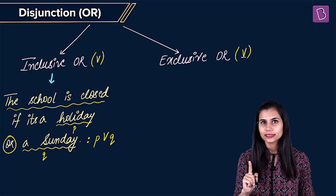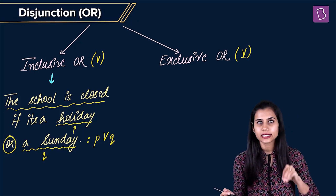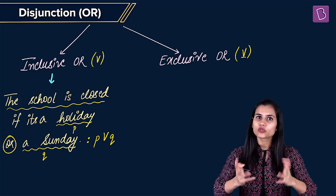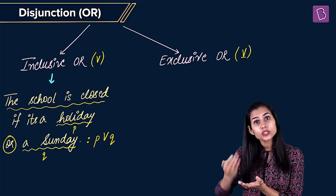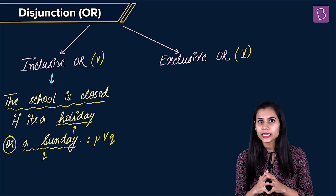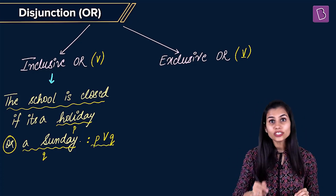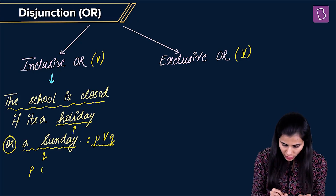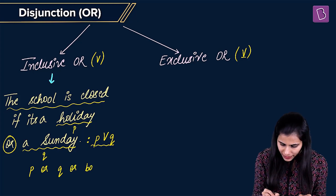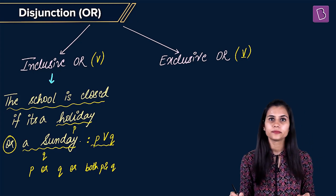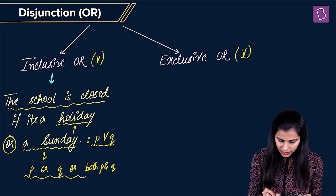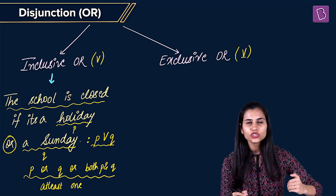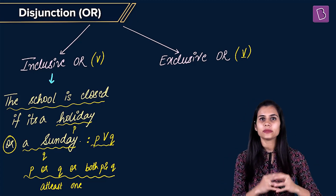According to this statement: if it is a holiday, the school is closed; if it is a Sunday, the school is again closed; and if the holiday falls on a Sunday, the school will still remain closed. That means the disjunction P ∨ Q holds valid when P is true, or Q is true, or both P and Q are true — meaning at least one of the alternatives should occur for the final statement to hold valid.